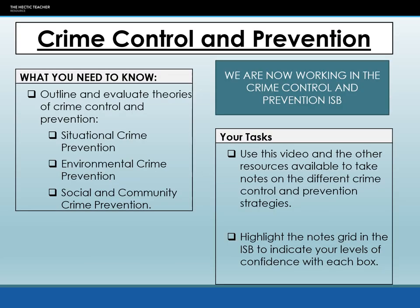As a reminder, your task is to ensure you have adequate notes on the three crime prevention methods discussed today — outline each one and evaluate its strengths and limitations. This includes the example studies: the Perry Preschool Programme, the Troubled Families Programme, the New York City Clean Car Programme, and the New York City Bus Terminal. Make sure your notes grid is highlighted, and if anything comes up as unclear, ask via chat or email.